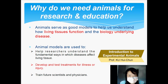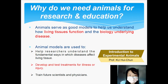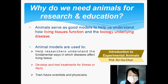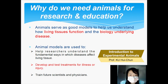Why do we need animals for research and education? Animals serve as good models to help us understand how living tissues function and the biological underlying disease. Animal models are used to help researchers understand the fundamental ways in which diseases affect living tissues, develop and test treatments for illness or injury, and train future scientists and physicians.